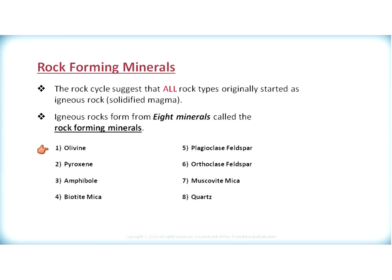The eight rock-forming minerals are: first, olivine; second, pyroxene; third, amphibole; fourth, biotite; fifth, plagioclase feldspar; sixth, orthoclase feldspar; seventh, muscovite mica; and eighth, quartz.